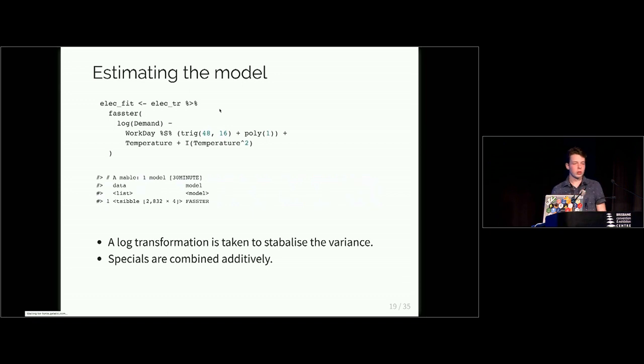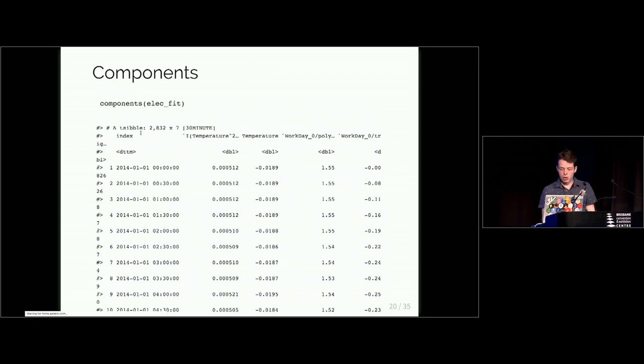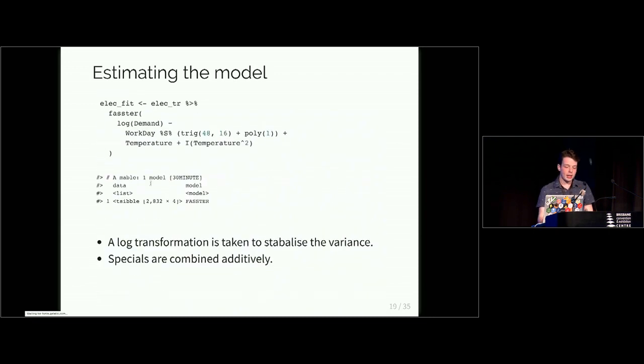So how do we put it all together? So we take our data and like the Fable package, we want to pipe it into our model and we additively combine our special terms. So we have our switching seasonality we discussed first and we combine that with our temperature exogenous regressors. And I'm also putting a log transformation on demand to help stabilize the variance. So you can see that we return a Mabel object and we've estimated our model.